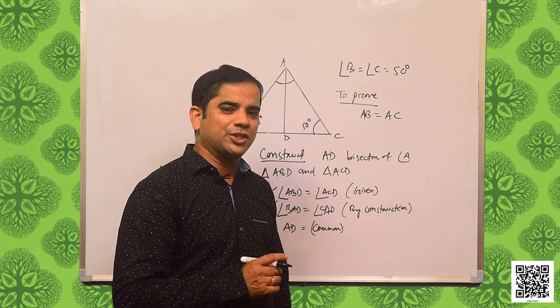Hope you have understood. This brings us to the conclusion for another theorem — Theorem 7.3 — which says the sides opposite to equal angles of a triangle are equal. This is the converse of Theorem 7.2. We can prove this theorem by ASA congruence rule as well as AAS congruence rule.